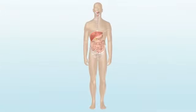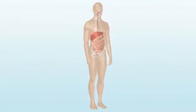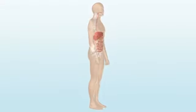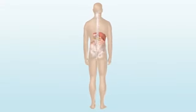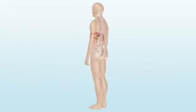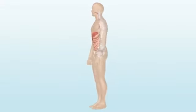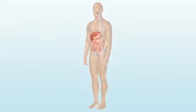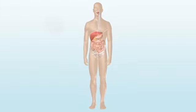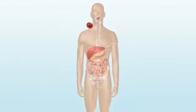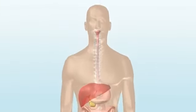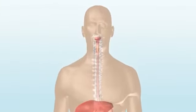Your digestive system consists of all the organs involved in breaking down the food you eat, absorbing nutrients, and eliminating waste products. When you take a bite of food, your digestive system is activated automatically.